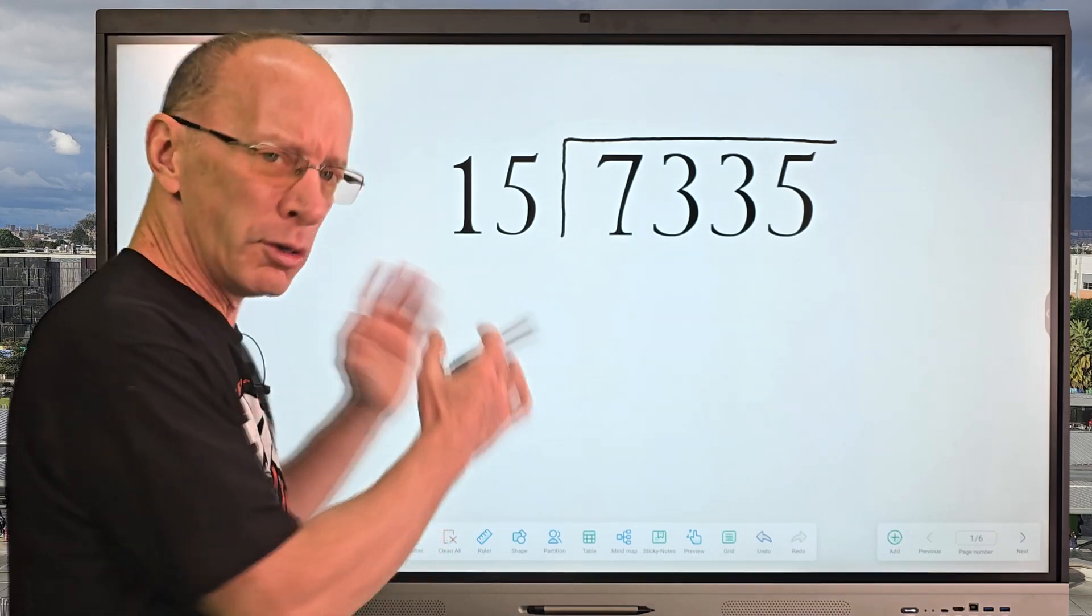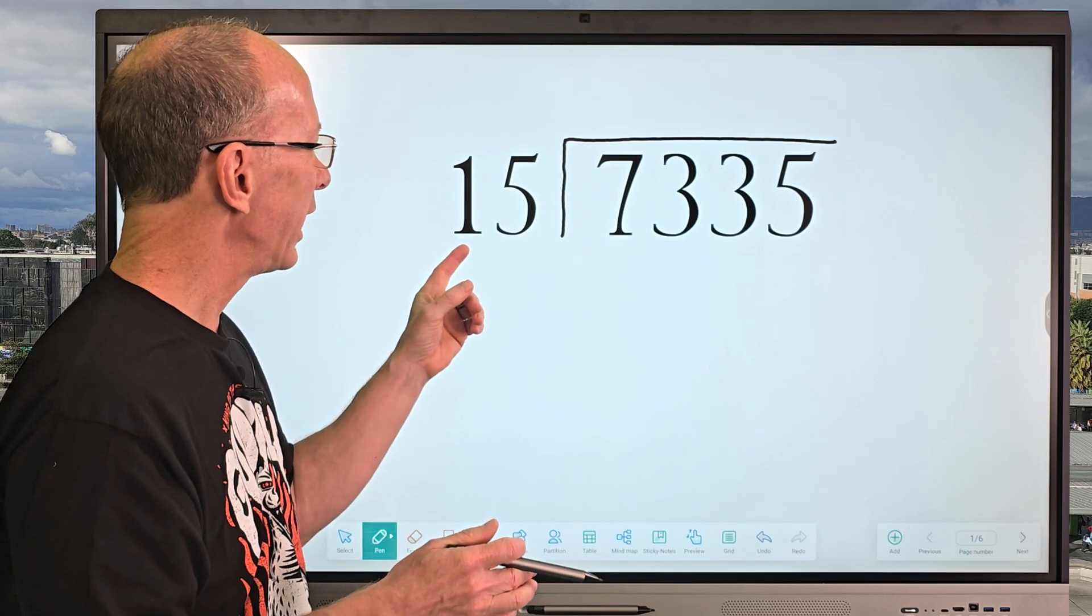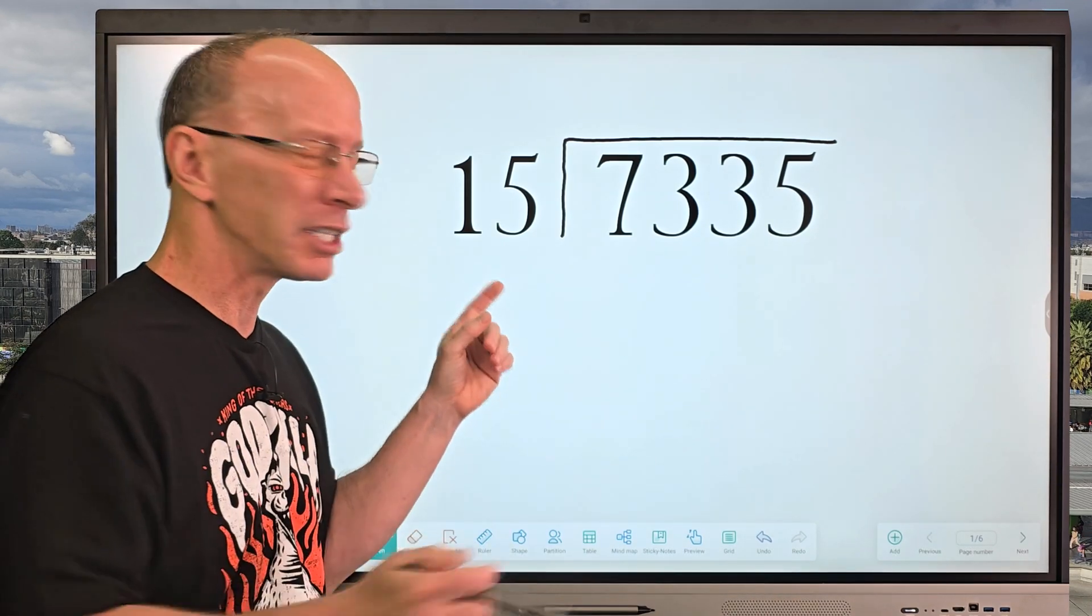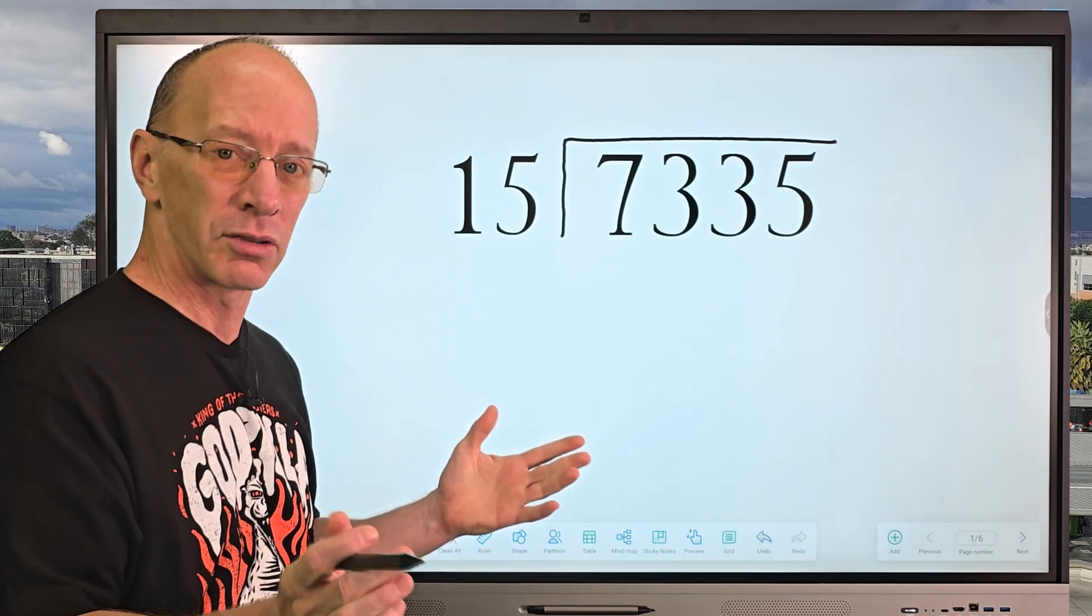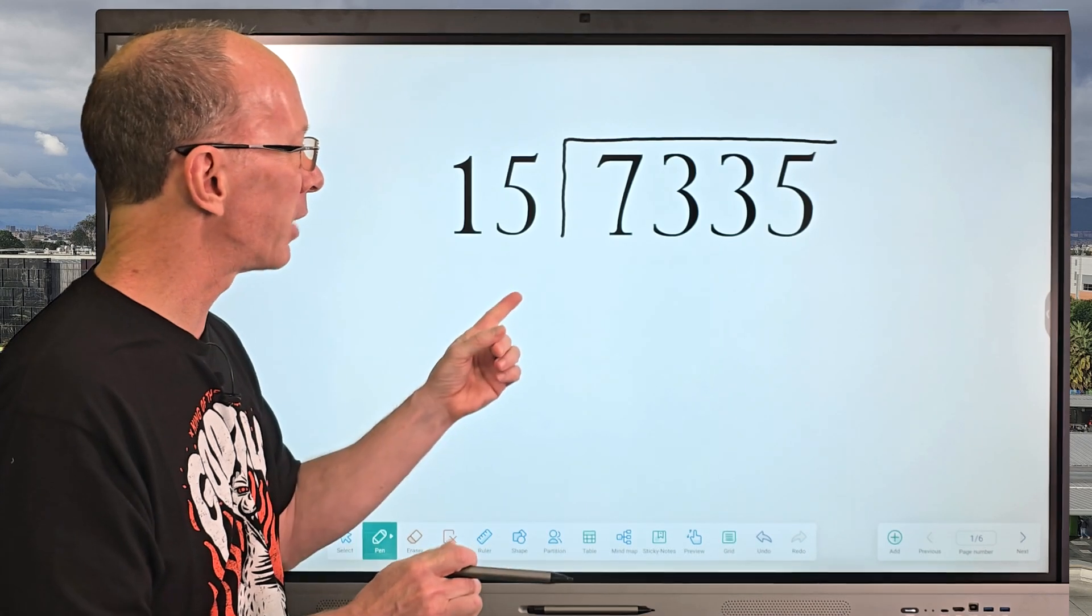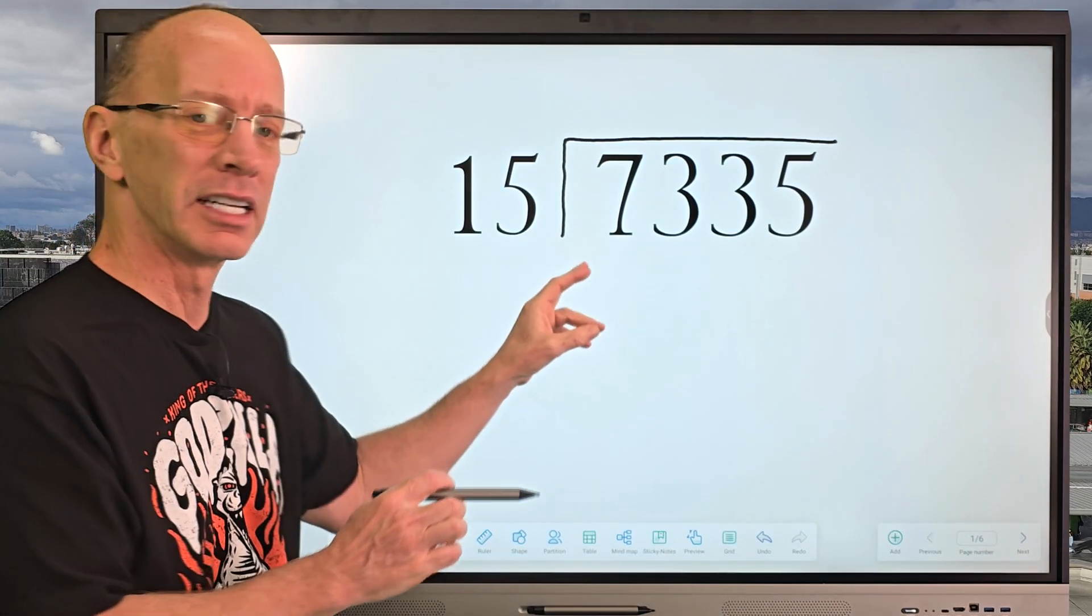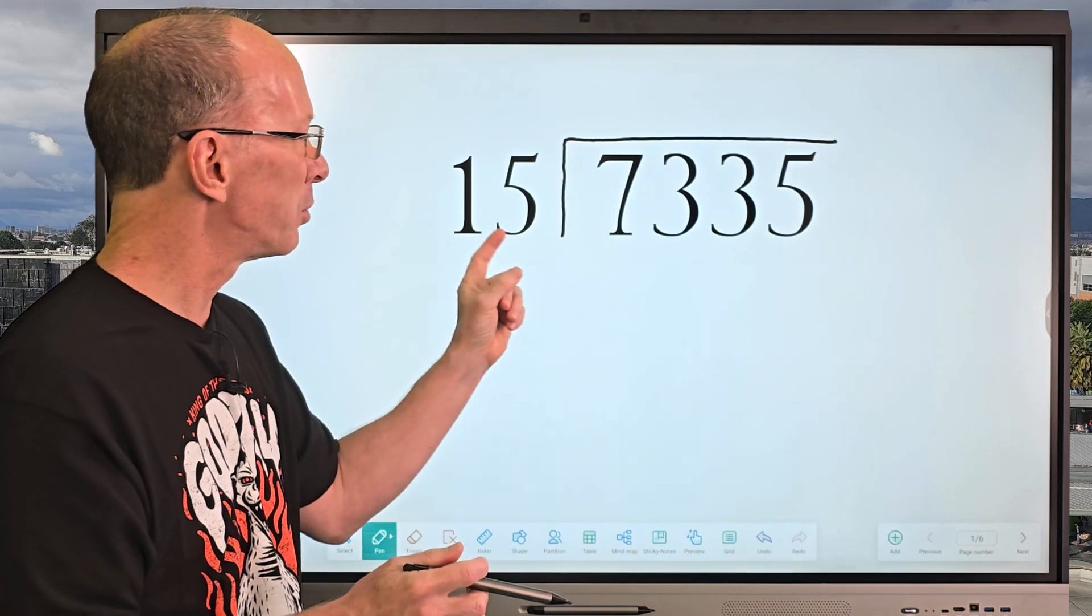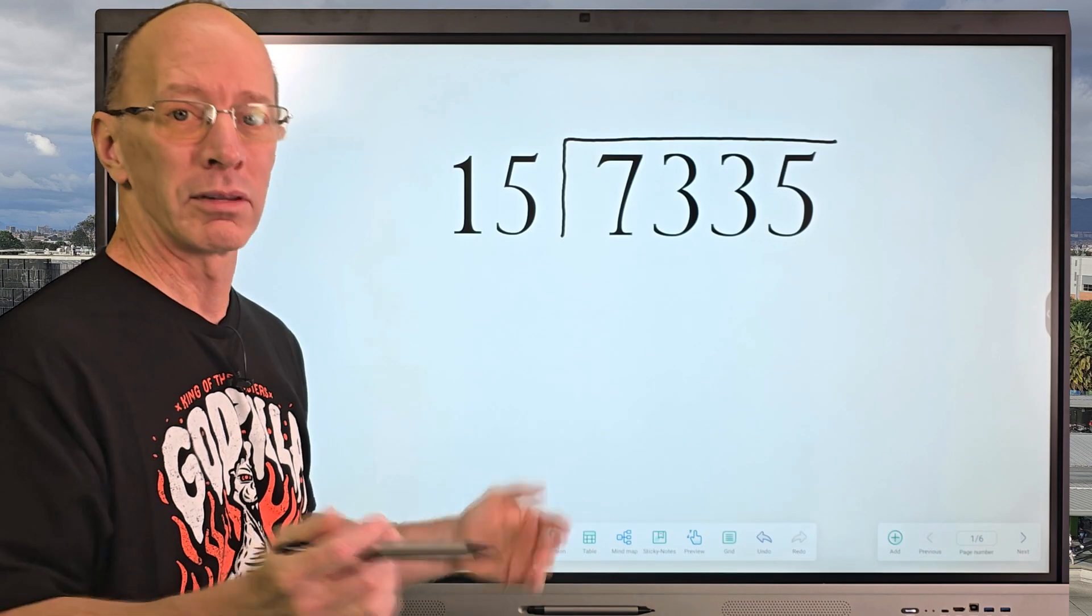So when you do problems like this, it's a big number, isn't it? It's a very big number. And I know my multiplication, but I don't know all the multiples of 15. So that's okay. We're going to do a little figuring off to the side to figure this problem out. First of all, I can't put 15 into 7, can I? I'm going to have to put 15 into 73. And how many times? Well, let's figure that out.